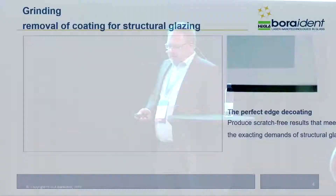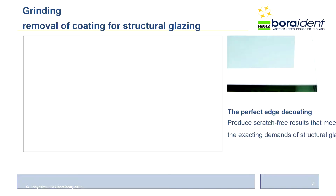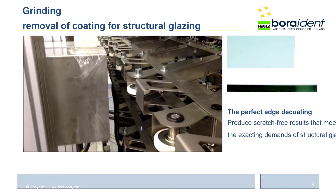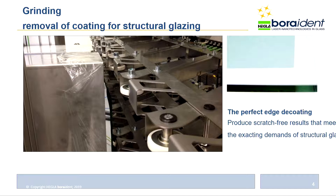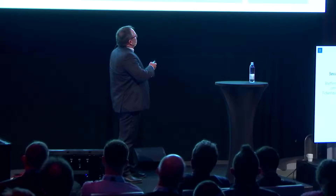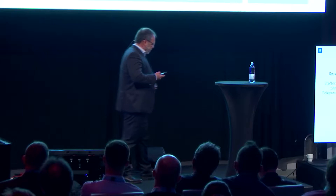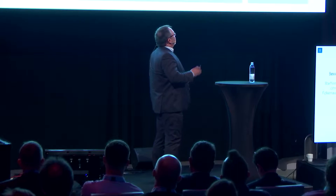The next application is in structural glazing. There is a demand to remove low-E coating or sun-protective coating. You can see the removal process of a metallic layer here — it is a very fast process. The huge advantage is that the quality of the edge removal is very high compared to mechanical removal, though the process is somewhat slower than mechanical removal depending on coating type and width. For structural glazing, you need to remove stripes ranging from 10 mm up to 300 mm wide.